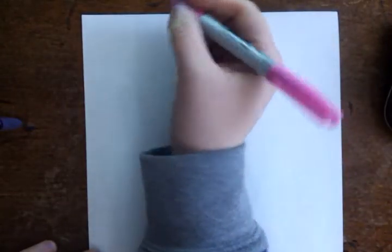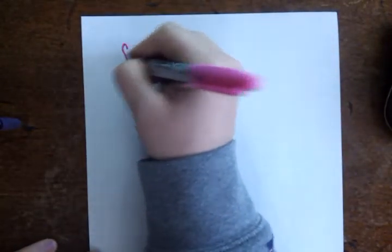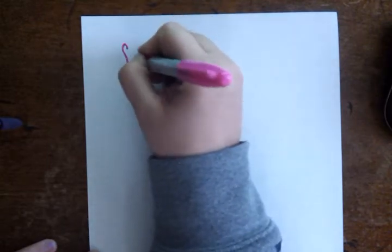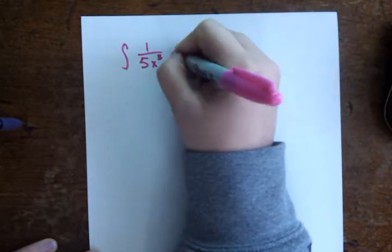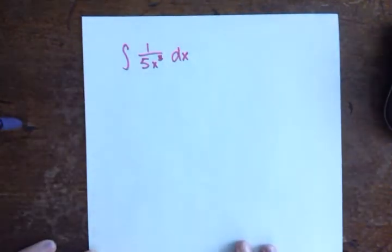Let's take a look at question number 3 on homework 17. They're asking us to find the indefinite integral of 1 over 5x to the 3rd power with respect to x.